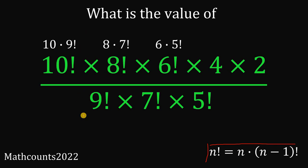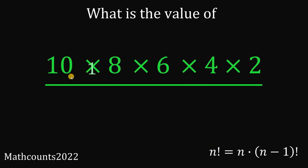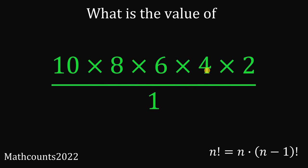We can cancel out 9 factorial on the numerator and denominator. We can also cancel out 7 factorial on the numerator and denominator, and we can cancel out 5 factorial as well. This simplifies to 10 times 8 times 6 times 4 times 2, all over 1.